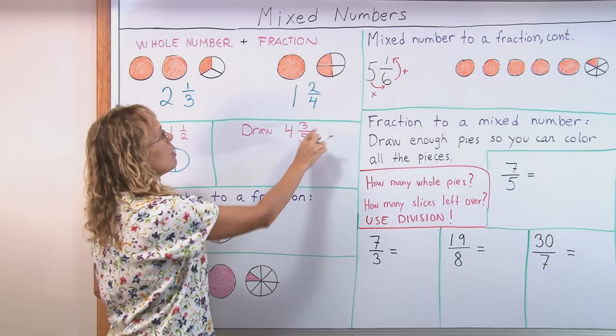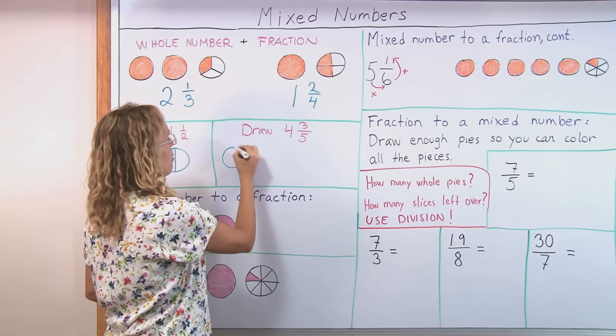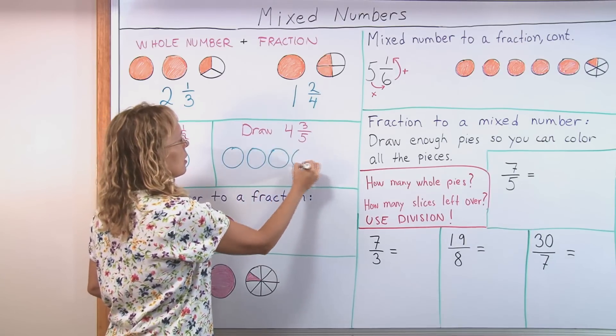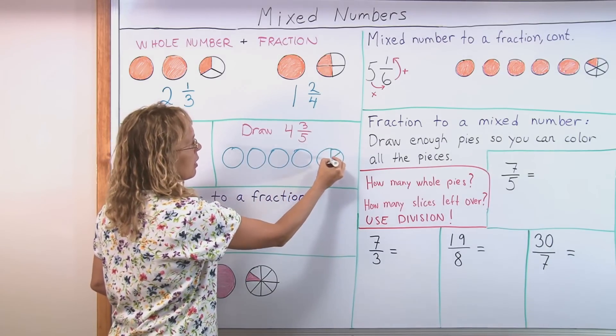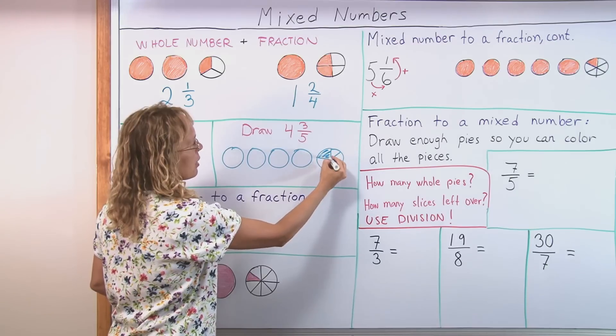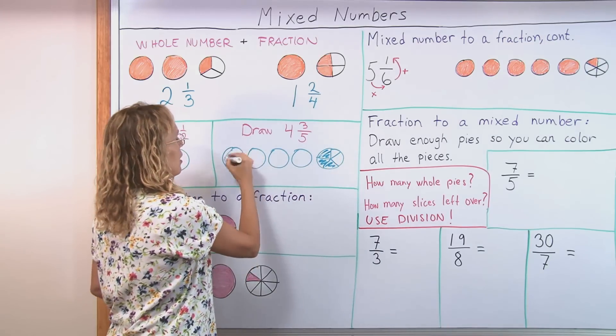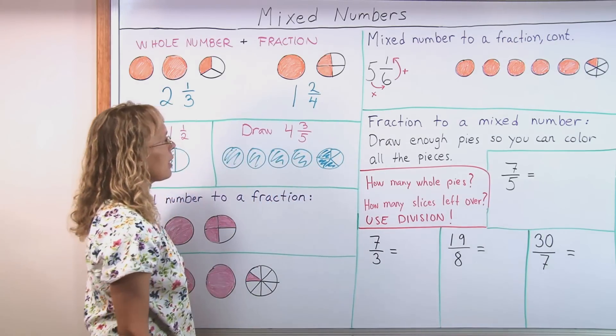Or draw four and three fifths. So we draw four whole pies and then a fifth pie. But here in the fifth pie we divide it into five parts, color three, then these are all colored. Like that.